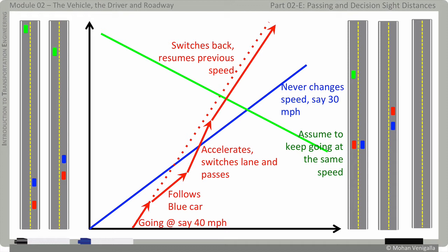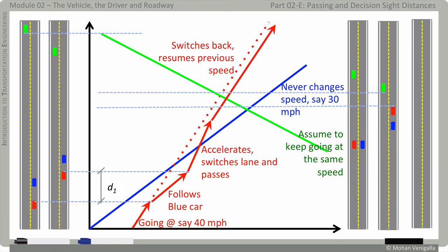Once the crossing to the other side is done, the red car driver switches back to its original speed. You can see the horizontal displacement between the dotted line and the solid red line — that is the time lost due to following the blue car. Meanwhile, the green car has approached much closer. The end state of the cars is shown, and the distances associated with various points are marked D1, D2, D3, and D4, which are explained in detail in the next slide.